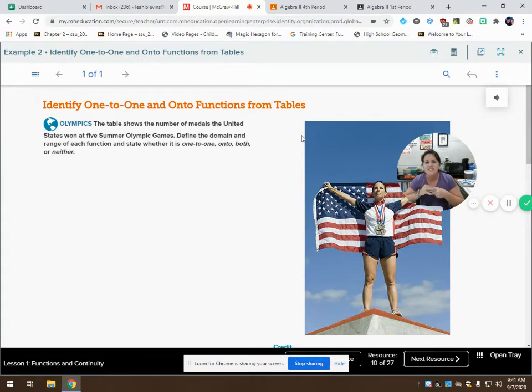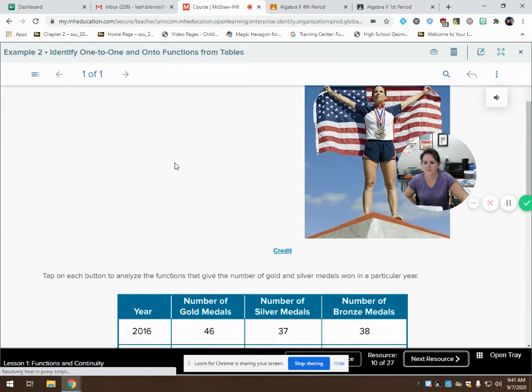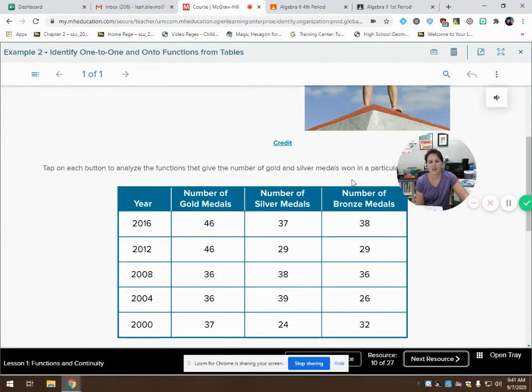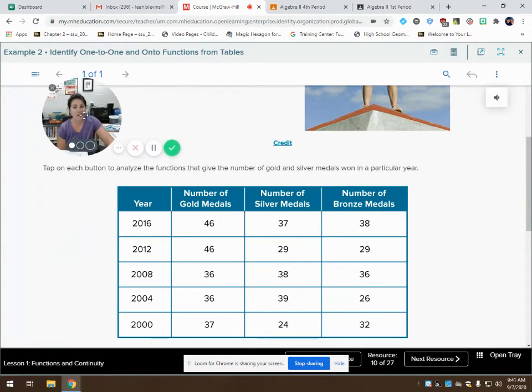So anyway, back to this problem. It says define the domain and the range of each function and state whether it's onto, one-to-one, both, or neither. So you're probably wondering, alright, Ms. Lovings, what is one-to-one. Let's go ahead and look at this and maybe you can figure it out as we go.